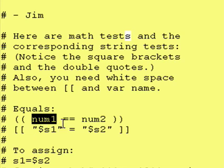If you want to test a string against another string or if you want to test a string against a specific value, then you use double square brackets instead of the double parentheses.